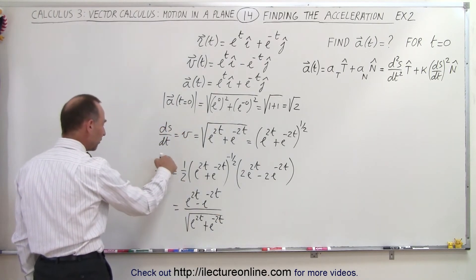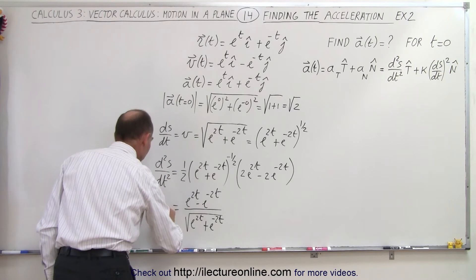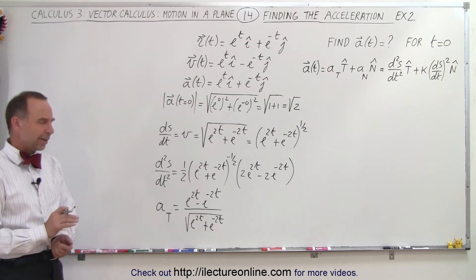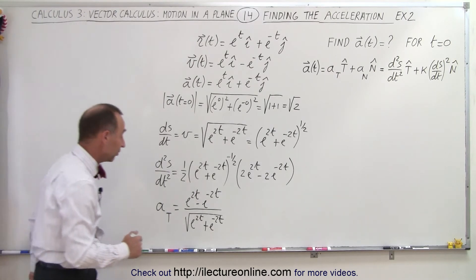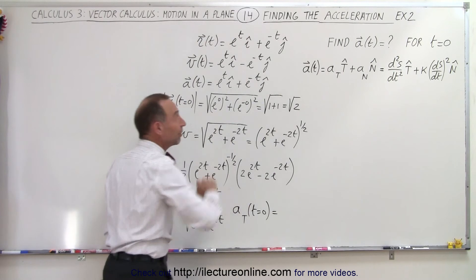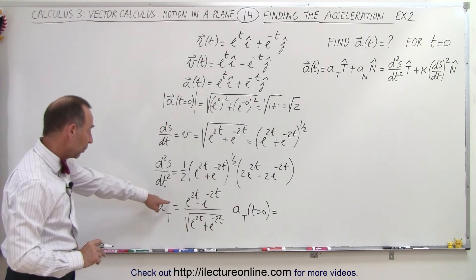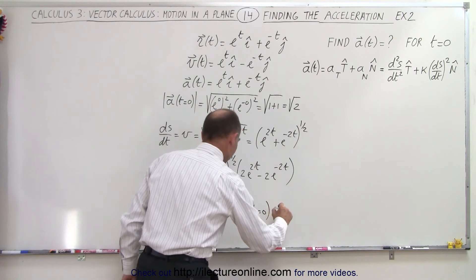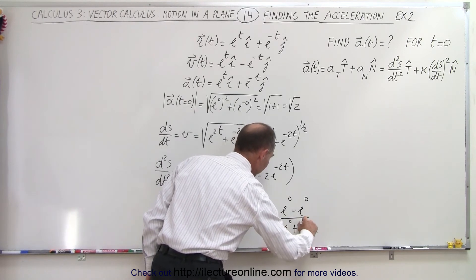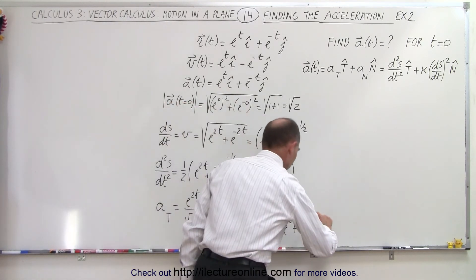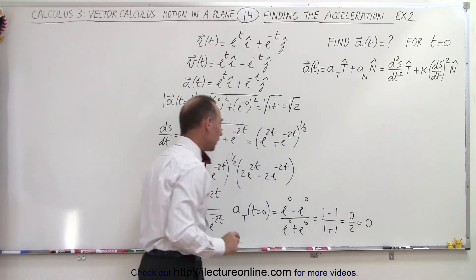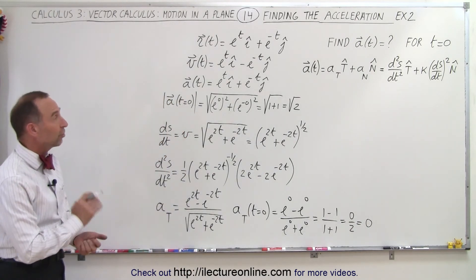And that would be the second derivative of s with respect to time, which by definition is the a sub t component — the tangential component. Now that's quite a mess, but since we're going to evaluate it for t equal to zero, that will become quite simple. Plugging in zero everywhere, we have e to the zero minus e to the zero divided by the square root of e to the zero plus e to the zero, which becomes one minus one over the square root of one plus one — zero over two — which is zero. The tangential component is equal to zero when t is equal to zero.